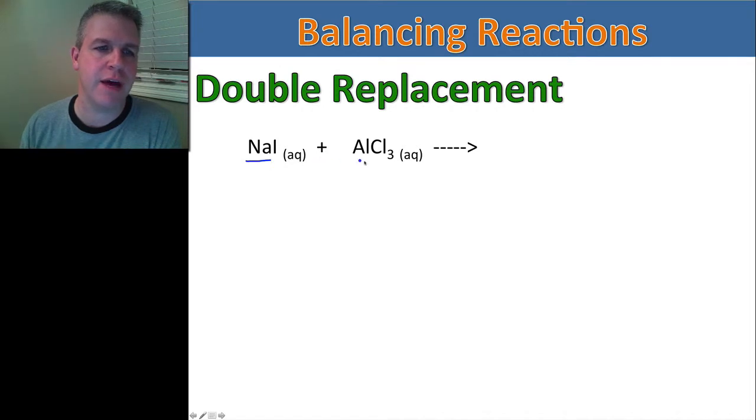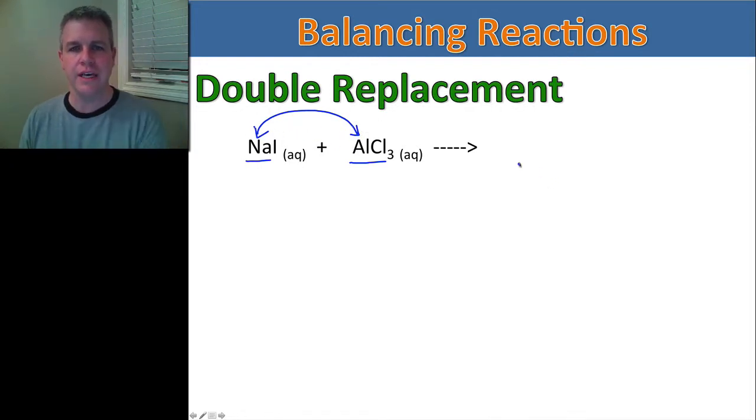So we have sodium iodide and aluminum chloride, they're combining, and they're going to give us two products. So what I'm going to do is switch the two positive ions, that's why we call it a double replacement. So the two positive ions are going to switch places, and they're always both ionic compounds, so we don't have to worry about a molecular here. So I'm going to now write sodium, and that's going to combine with the chlorine, so sodium chloride.